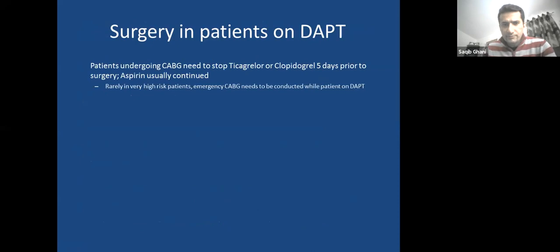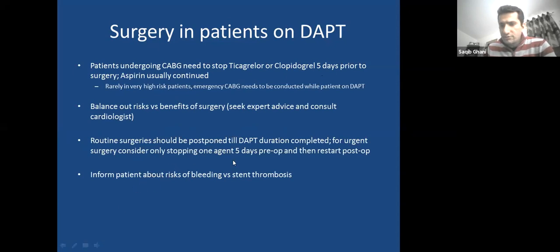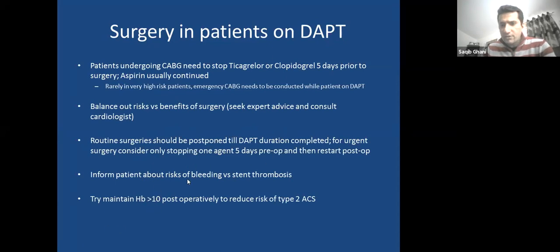For surgical patients requiring CABG, clopidogrel is typically stopped five days before surgery; for urgent procedures, the bleeding risk must be accepted. Routine operations should be deferred until it is safe to stop tablets. Always inform patients — this is a legal issue. There are competing risks: bleeding on one side and stent thrombosis on the other. Postoperatively, patients often become anemic — aim to keep hemoglobin above 10 to reduce cardiac strain and avoid type 2 ACS from demand ischemia.